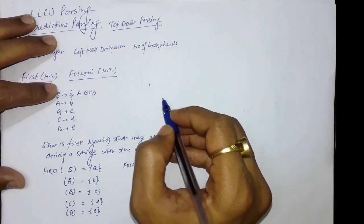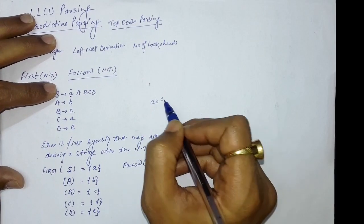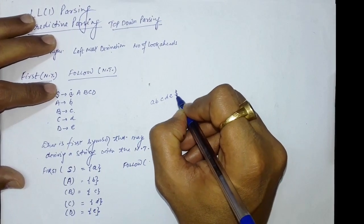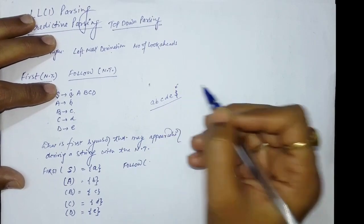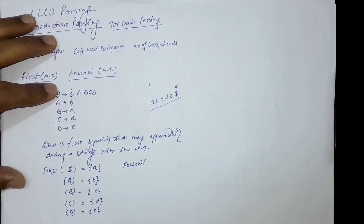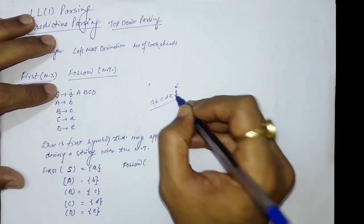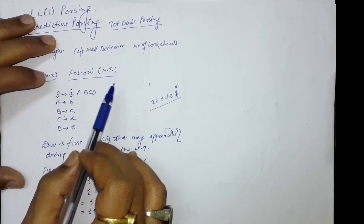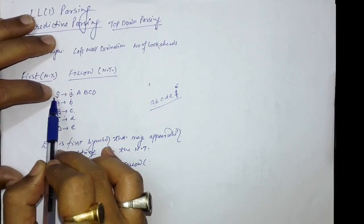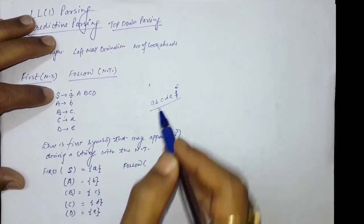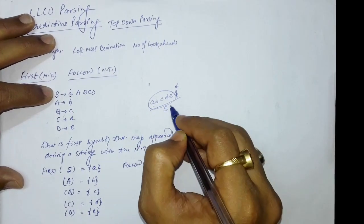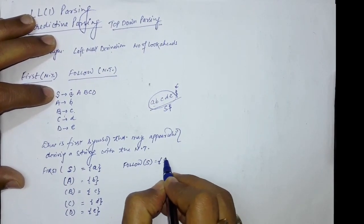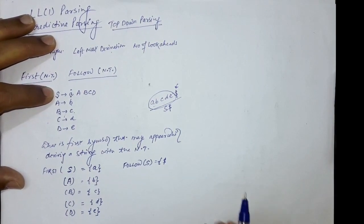Let us say we have a string a, b, c, d, e. While doing the parsing, we apply a dollar sign at the end. So after every string, there will be a dollar. We will derive using the start symbol, so naturally a dollar will come after S. Therefore, FOLLOW of the start symbol will certainly contain a dollar.